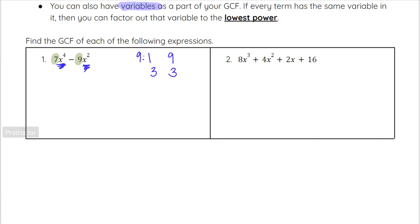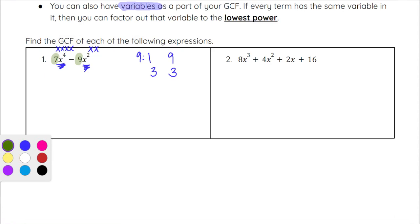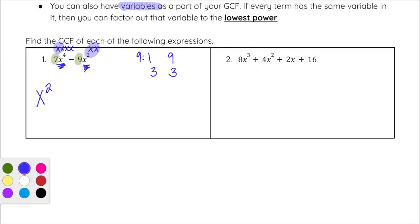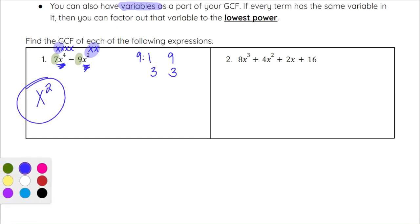So we move on and look at x to the fourth and x squared. Because there is an x in each term, we can divide out x to some power — always the lowest power. x to the fourth is x·x·x·x, and x squared is x·x. The greatest number of x's we can pull out of each term is 2, so x squared is our GCF between these two terms.